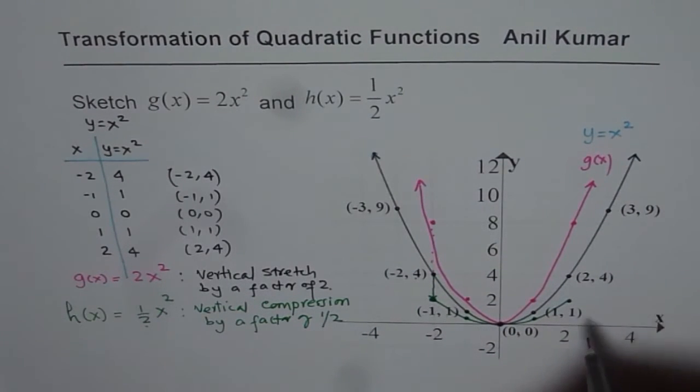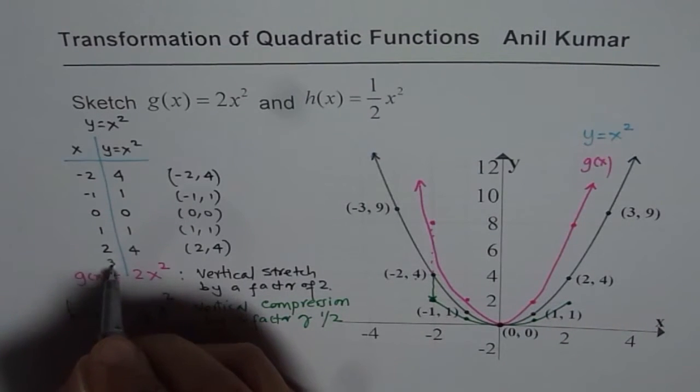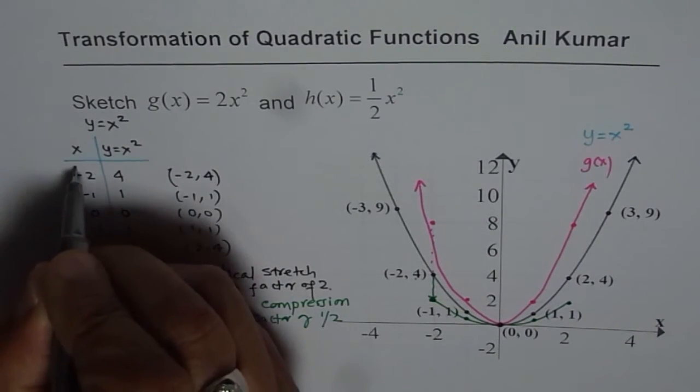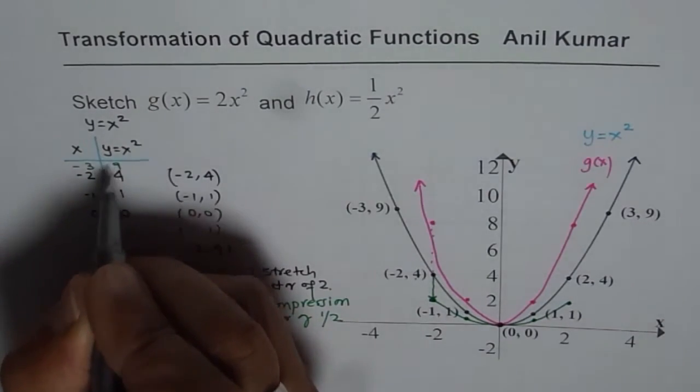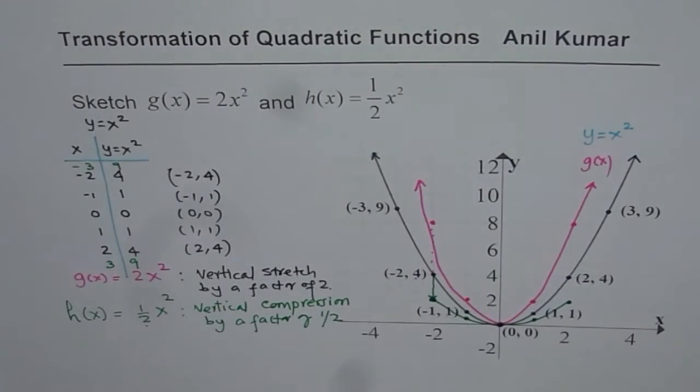So at times you can take more points. You could have taken 3. 3 square is 9. And also minus 3. Minus 3 square is 9. The points shown here.